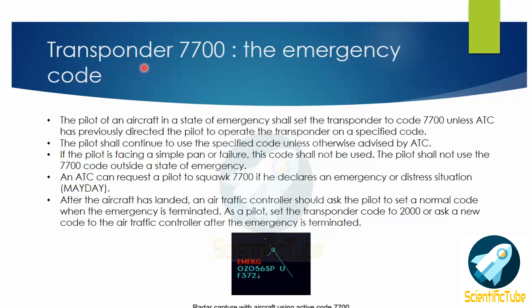Let's have a look at transponder code 7700, which is also called the emergency code. The pilot of an aircraft in a state of emergency shall set the transponder to code 7700 unless ATC has previously directed the pilot to operate on a specified code. The pilot shall continue to use the specified code unless otherwise advised by ATC. If the pilot is facing a simple inconvenience or minor failure — for example, low on fuel, which is not a distress — the code shall not be used. The pilot shall not use 7700 outside a state of emergency.